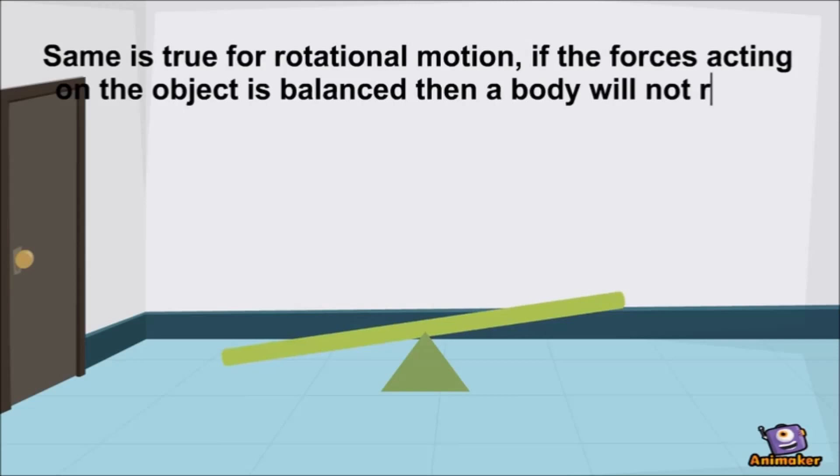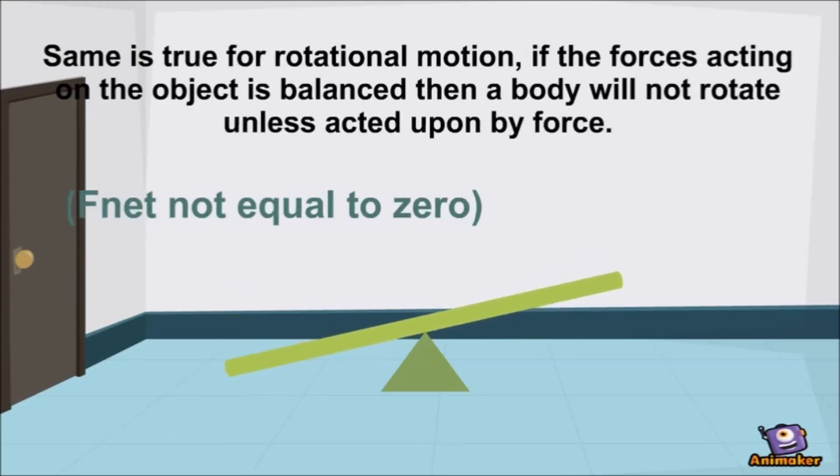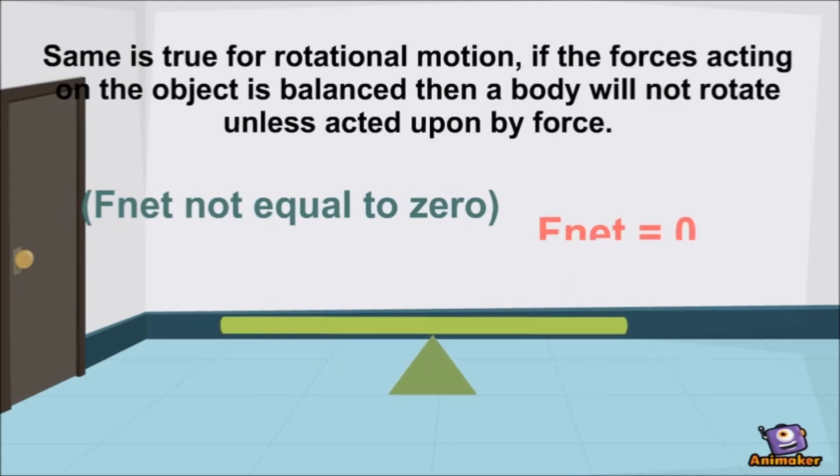If the forces acting on an object is balanced then a body will not rotate unless acted upon by force. F net is not equal to zero. F net is zero.